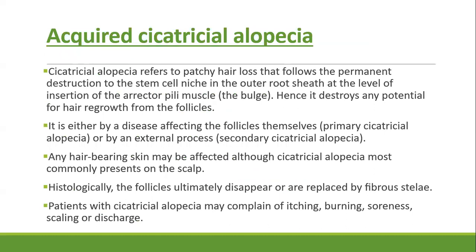We will classify the diseases in this lecture as acquired and congenital cicatricial alopecias. Cicatricial alopecia is referred to as a patchy hair loss that follows permanent destruction of stem cells in the outer root sheath at the level of insertion of erector pili muscle. Hence, this condition destroys the potential of hair regrowth from that follicle.